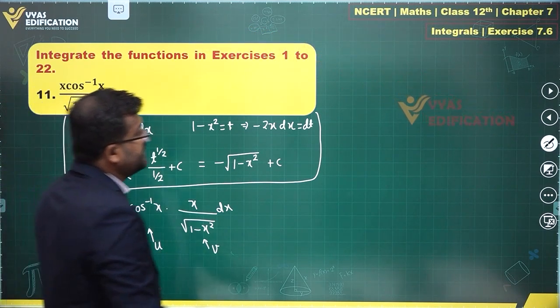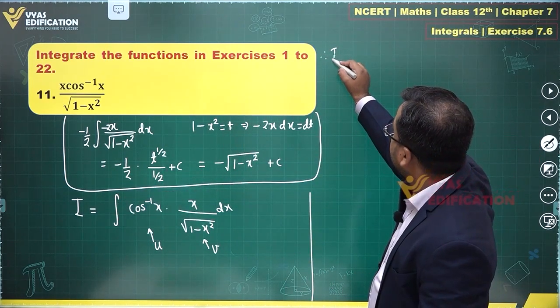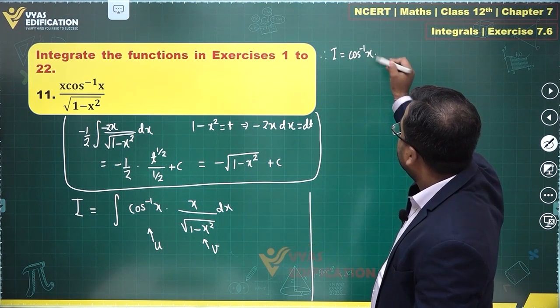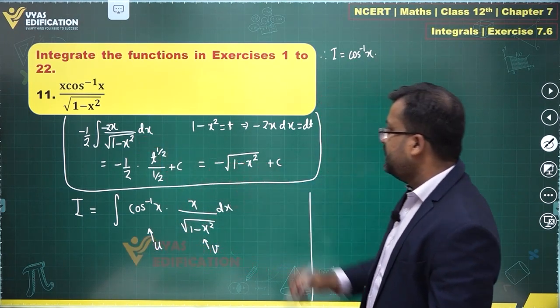Therefore, i becomes equal to first function, cos inverse x times integral of this, integral of this is this,